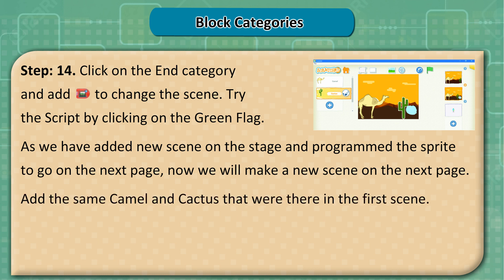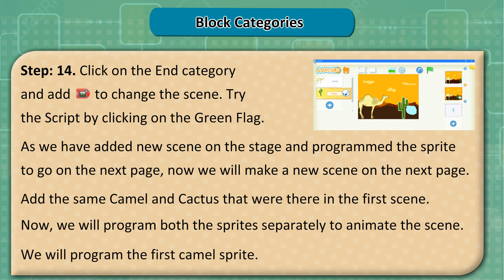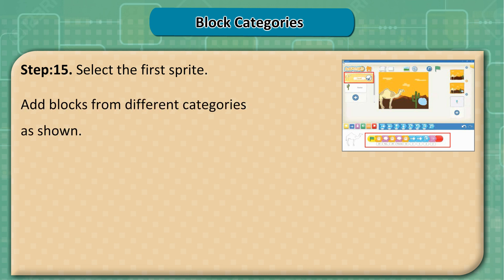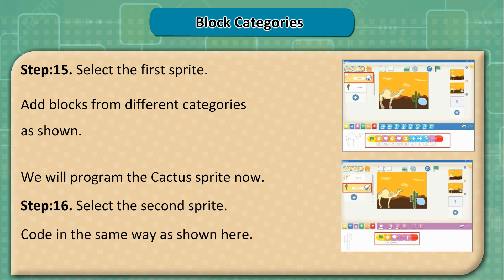As we have added a new scene and programmed the sprite to go to the next page, we will now make a new scene on the next page. Add the same camel and cactus that were in the first scene. We will program both sprites separately to animate the scene. Step 15: Select the first sprite and add blocks from different categories as shown. Step 16: Select the second sprite and code in the same way as shown.